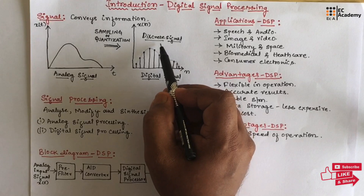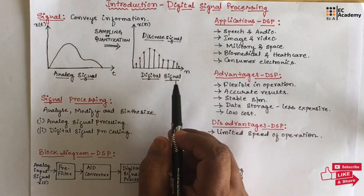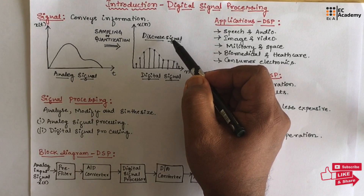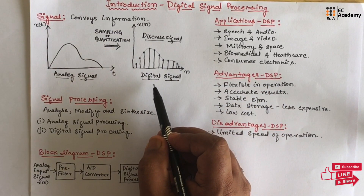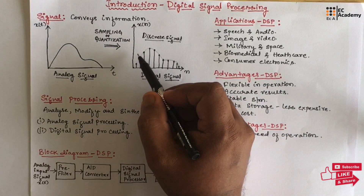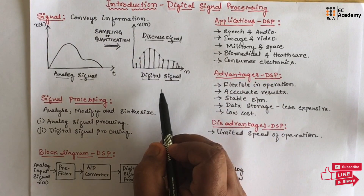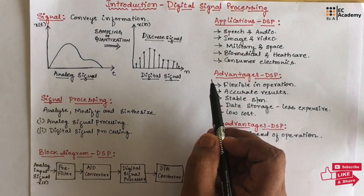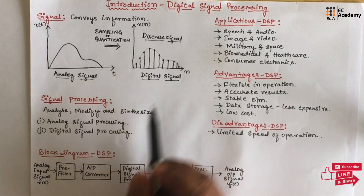Once the discrete signal is obtained, it is converted into a digital signal. To convert from discrete signal to digital signal, each sample is converted into binary code, and the sequence of binary codes is known as the digital signal.